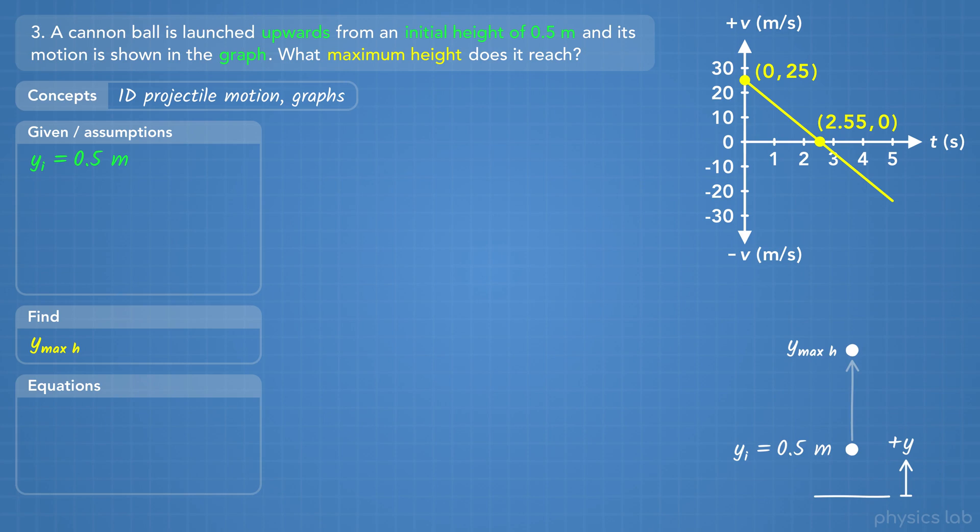We also know that whenever an object is at the maximum height, the vertical velocity is 0. And we know the vertical acceleration will be negative g.